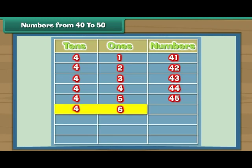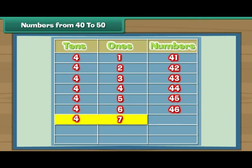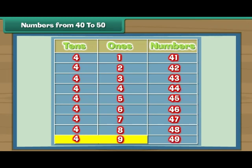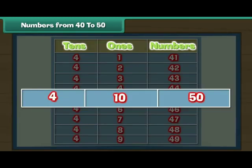Four tens and six is 46. Four tens and seven is 47. Four tens and eight is 48. Four tens and nine is 49. Four tens and ten give five tens — that is 50.